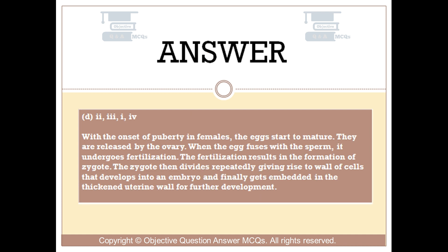With the onset of puberty in females, the eggs start to mature. They are released by the ovary. When the egg fuses with the sperm, it undergoes fertilization. The fertilization results in the formation of a zygote. The zygote then divides repeatedly giving rise to a ball of cells that develops into an embryo and finally gets embedded in the thickened uterine wall for further development.